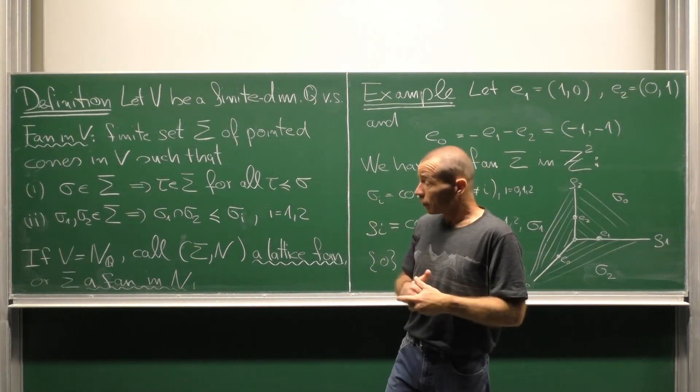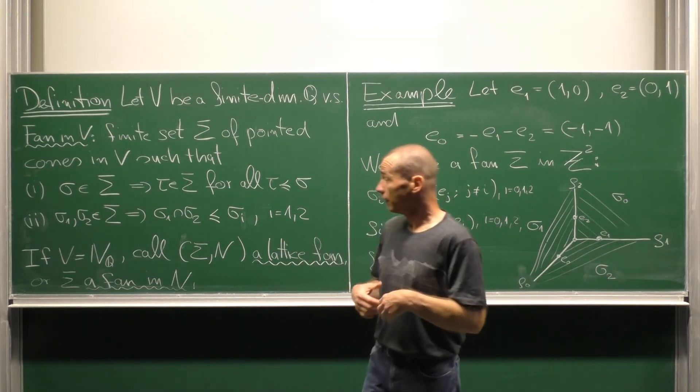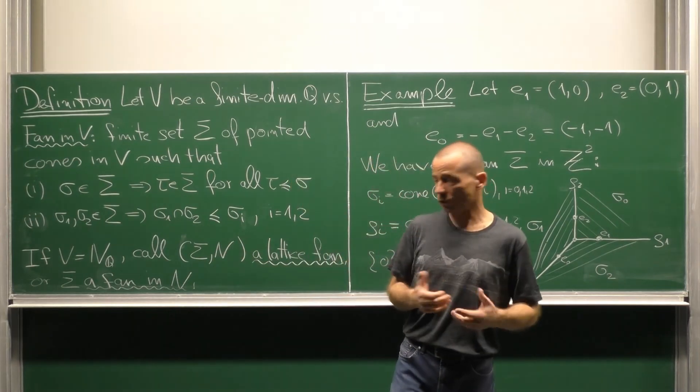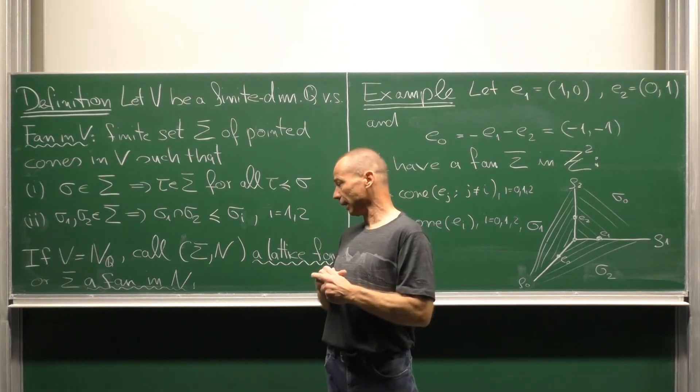If the vector space v is the rational vector space associated with the lattice N, then we call the pair sigma N a lattice fan or speak of sigma as a fan in the lattice N.